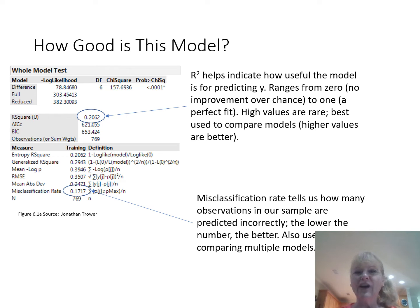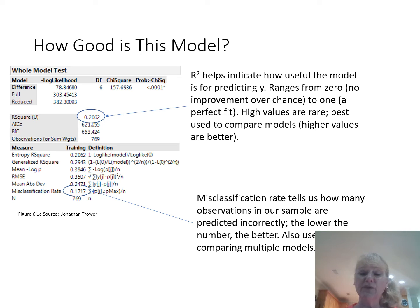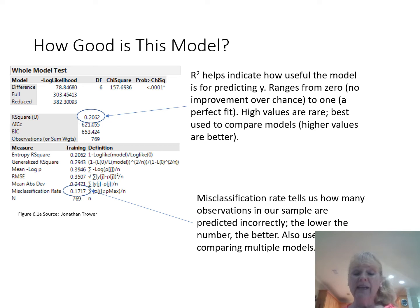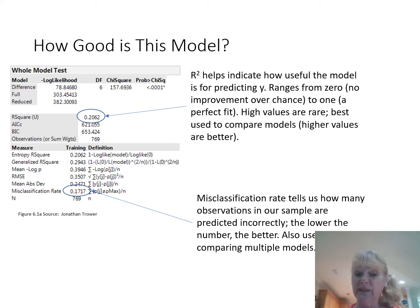R-squared is not going to be interpreted in the same manner as it was in regular regression. Now it's simply a measure we can compare between different models and choose the one that seems most useful. When asked how useful the model is, you can simply convert the R-squared value. You'll notice that these R-squared values are not usually as high as the ones we got in regular regression. The misclassification rate tells us how many observations were predicted incorrectly — here, 17% of the values predicted to need a pastime device didn't really need one, and vice versa.